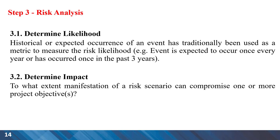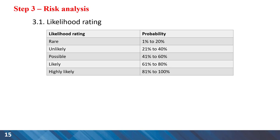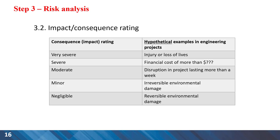The third step is risk analysis, where we need to determine the likelihood of risks and also their impact. In terms of likelihood, we can consider probabilities in different ranges and use descriptive ratings such as rare, unlikely, possible, likely, and highly likely. Under impact, we can use verbal descriptors such as very severe, severe, moderate, minor, and negligible to identify the impact.